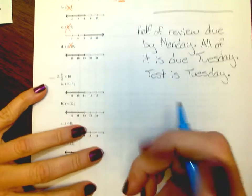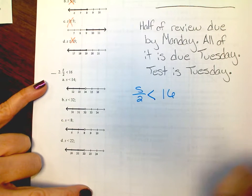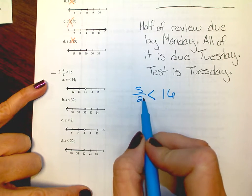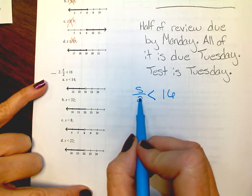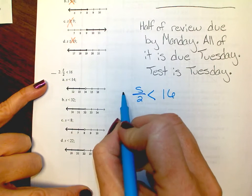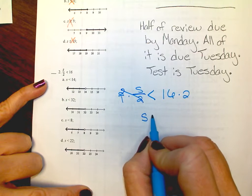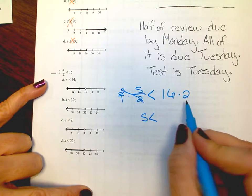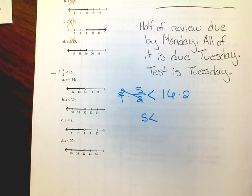Number 2: s divided by 2 is less than 16. It can't be 16, so everything needs to be open. To get s by itself, multiply both sides by the reciprocal of 2. This cancels out, leaving s is less than 16 times 2, which is 32. So s is less than 32. Your answer should be B.